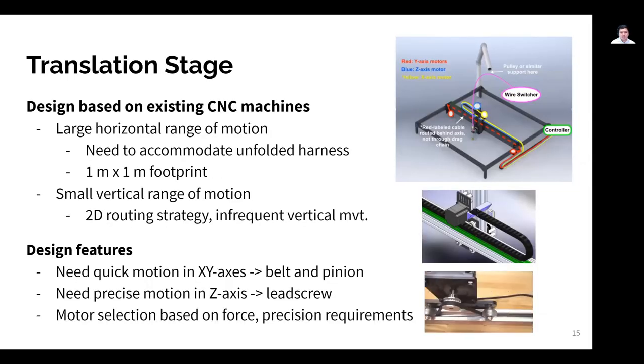The translation stage serves to move the wire extruder around the workspace, depending on where the wire is needed, and the design was based on existing CNC machines. We have a relatively large footprint of the machine, one meter on each side, to accommodate fully the unfolded wire harness we expect to route. And although there were different design requirements for the X, Y axes and the Z axes, we used stepper motors on all of them for speed and precision.